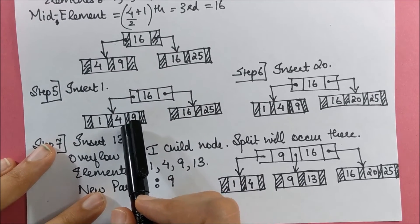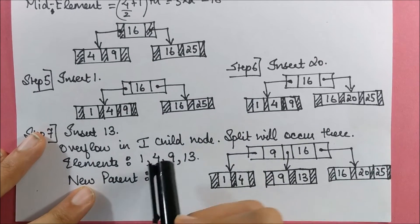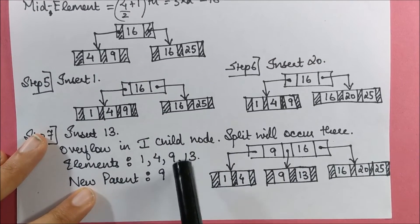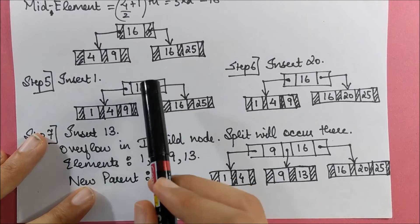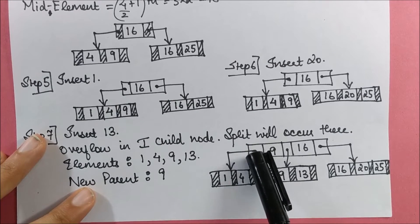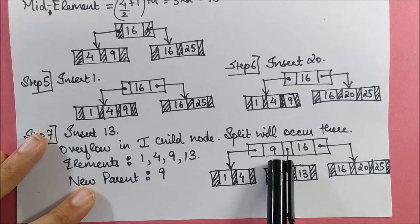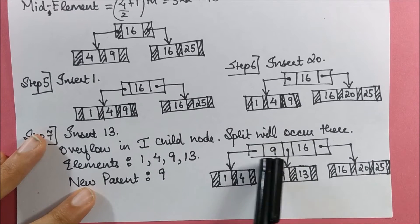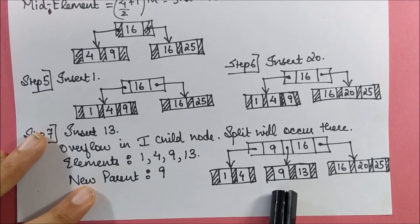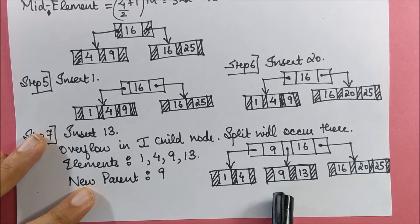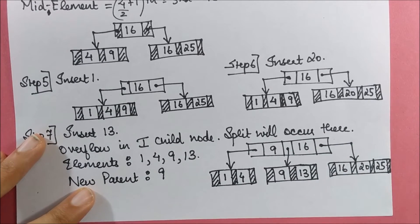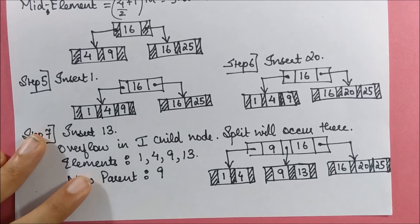After inserting 13, the left node holds 1, 4, 9, 13 — split occurs. The 3rd element, 9, becomes the new parent and is promoted upward. The root now has 9 and 16. Elements less than 9 (1 and 4) go to the left of 9; elements greater than or equal to 9 but less than 16 (9 and 13) go between 9 and 16; elements greater than or equal to 16 remain on the right of 16.